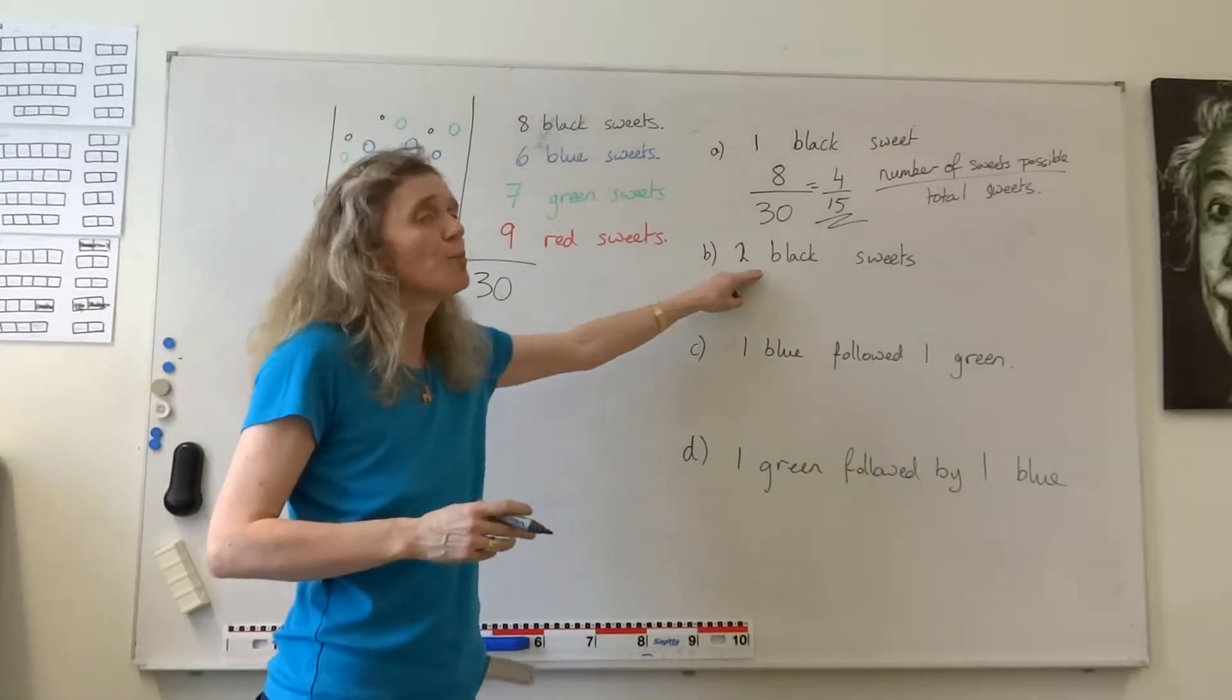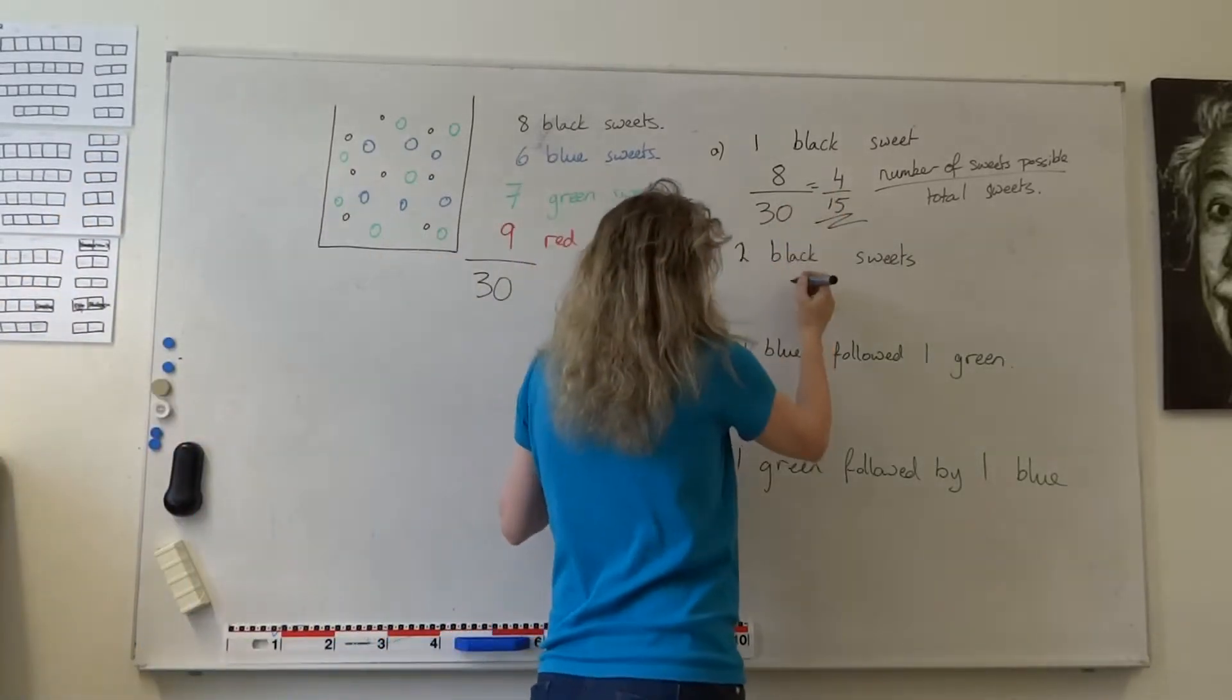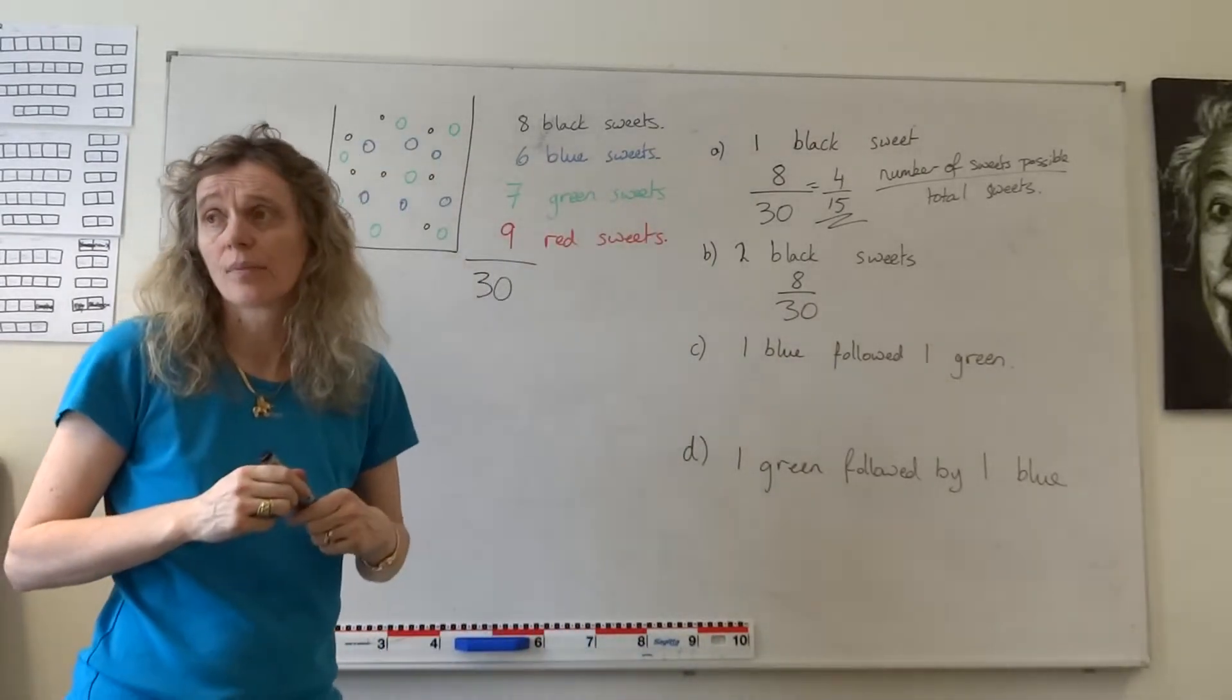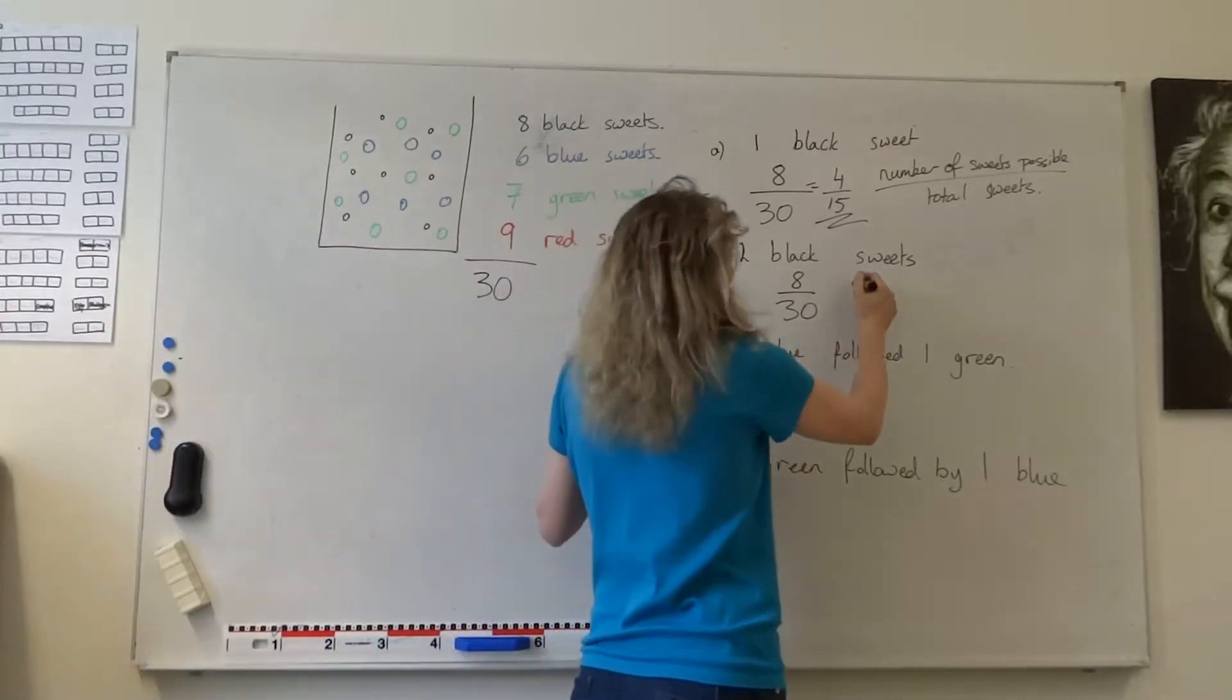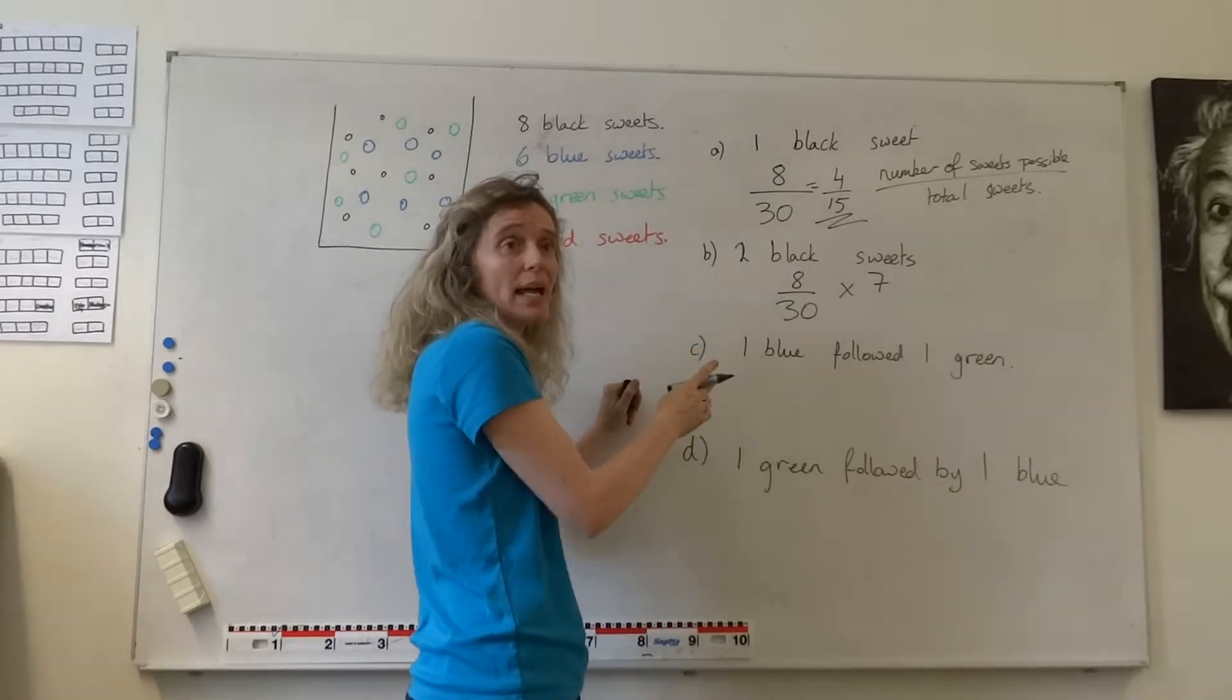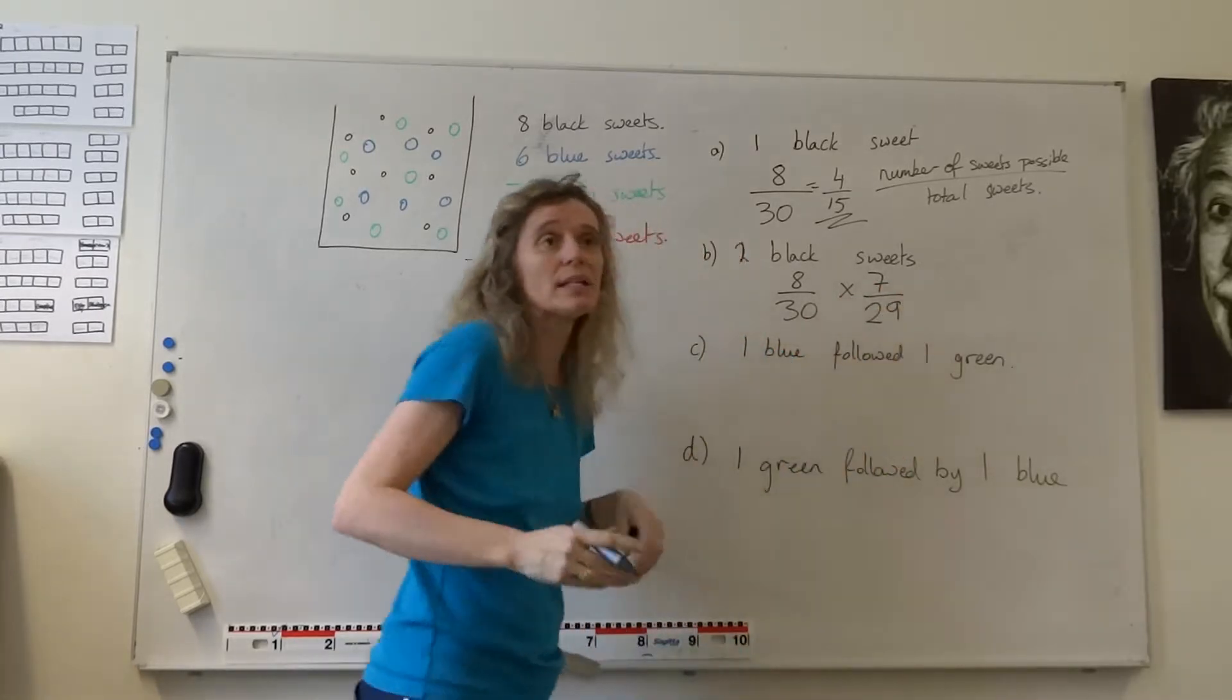What about 2 black sweets then? Well, the first time we put our hand in, there's a chance of 8 thirtieths that we're going to get one black sweet. But now there aren't 8 black sweets anymore. So the second time we put our hand in, there are only 7 black sweets left. And there aren't 30 in the bag anymore, because one of them is already in my mouth. There's only 29 sweets left now.